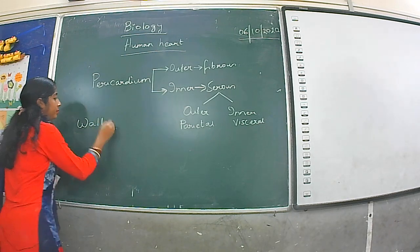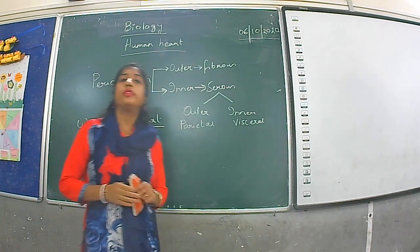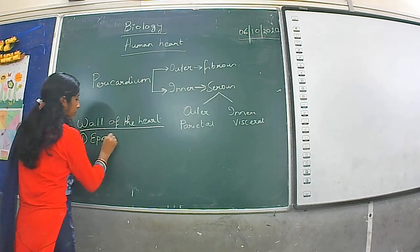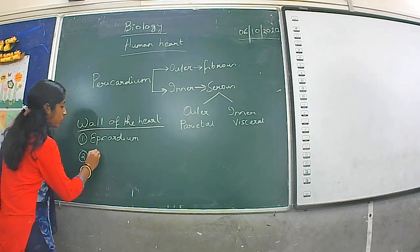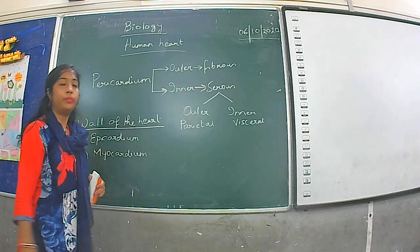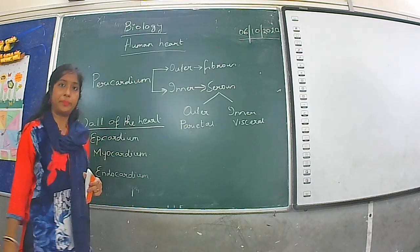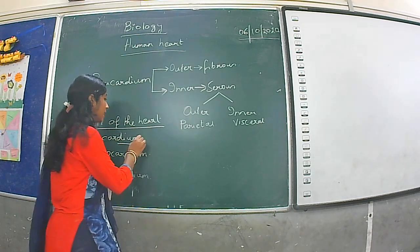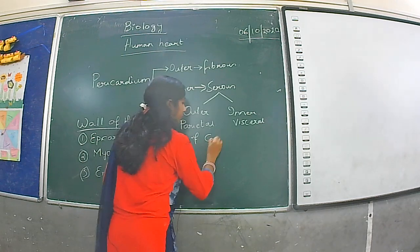Coming to the walls of the heart, the walls are divided into three layers. The first layer is known as the epicardium. The second or middle layer is known as the myocardium. And the third layer is the endocardium. The epicardium is connected with the serous pericardium and is made up of connective tissue.